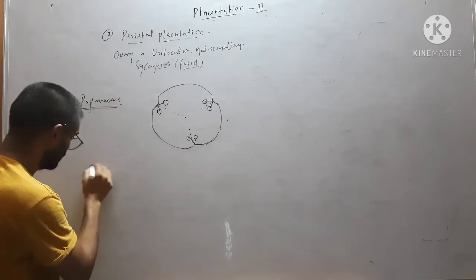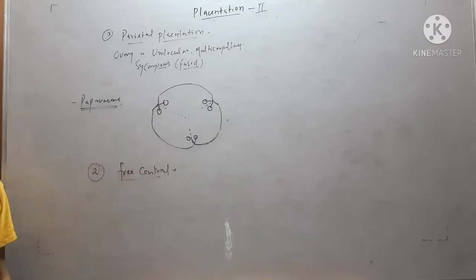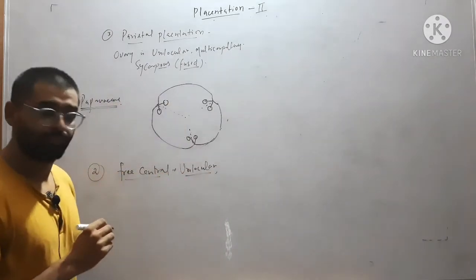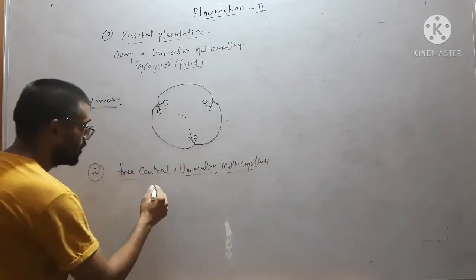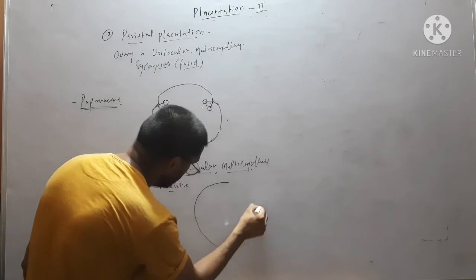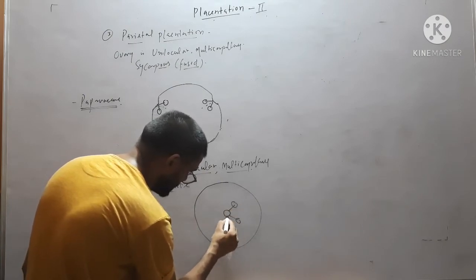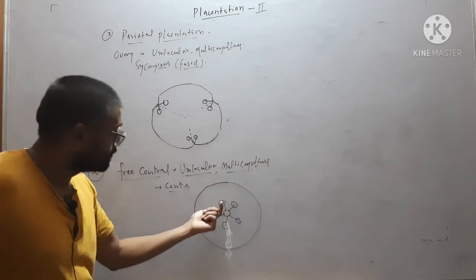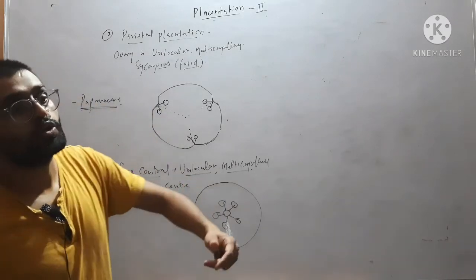The next type is free central placentation. In free central placentation, the ovary is unilocular and multicarpellary. Ovules or placentae arise at the center. This is the outer wall of the ovary, and from the center many placentae will arise, each bearing an ovule. It is multicarpellary because all the carpels are fused with no partition.